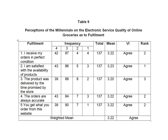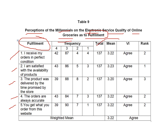Let's look at another table, which focuses on statement questions. This table presents the perceptions of millennials on the e-service quality of online grocery services as to fulfillment. The variables shown include frequency, total, mean, verbal interpretation, rank, and the weighted mean.